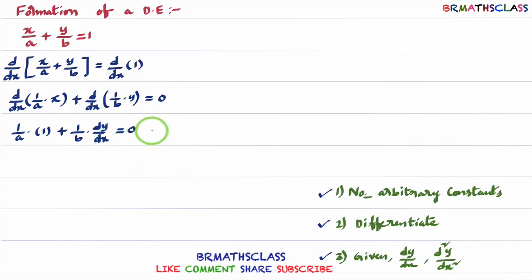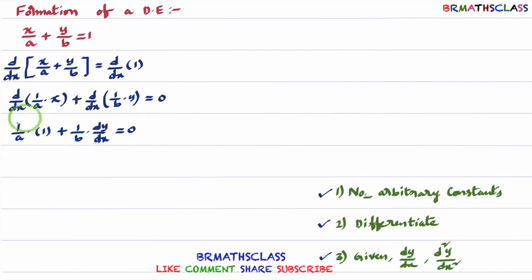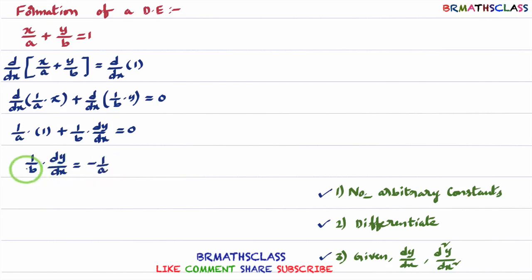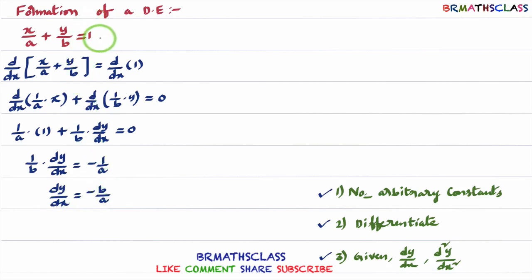One time differentiation is over. We have 2 arbitrary constants, so we need to differentiate 2 times. Our main intention is to eliminate arbitrary constants A and B. From the result, 1/A + (1/B)·(dy/dx) = 0, I take 1/A to the right-hand side: (1/B)·(dy/dx) = −1/A. Taking B to the other side gives dy/dx = −B/A. One time differentiation is done; now I differentiate again.